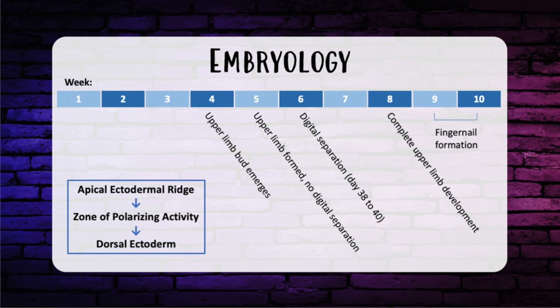Growth in the radial-ulnar axis is determined by the zone of polarizing activity, the ZPA. This is located in the posterior margin of the limb bud, and sonic hedgehog protein is secreted to signal development of the limb into the radial-ulnar aspects. Alterations in this pathway can result in deformities such as mirror hand. The dorsal-ventral axis of development is signaled by the Wnt pathway, which produces a transcription factor LMX1 that induces development of dorsal structures.